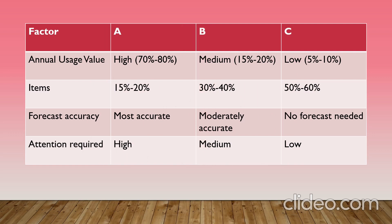Considering annual usage value: items with high annual usage value come under A, medium annual usage value comes under B, and low annual usage value comes under C. 15-20% of items come under A, 30-40% come under B, and 50-60% come under C.